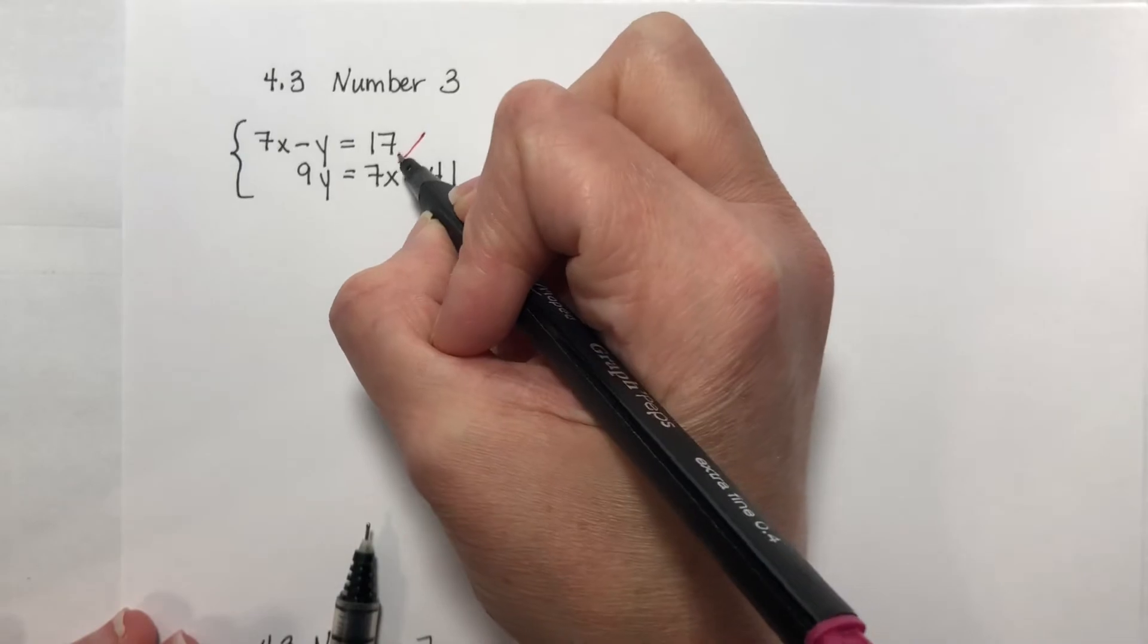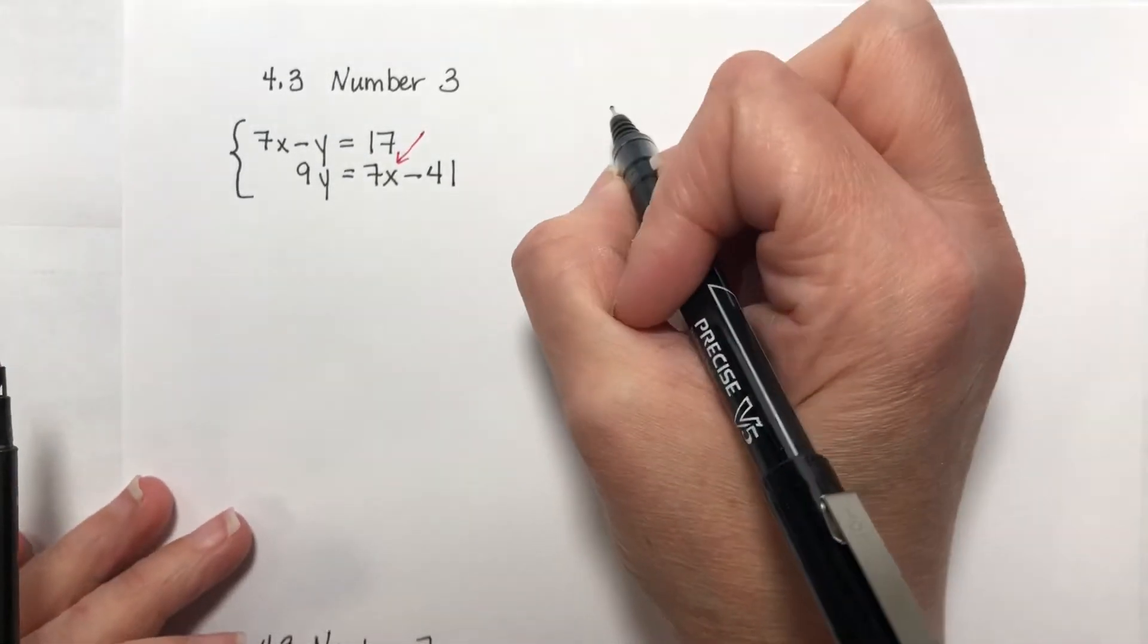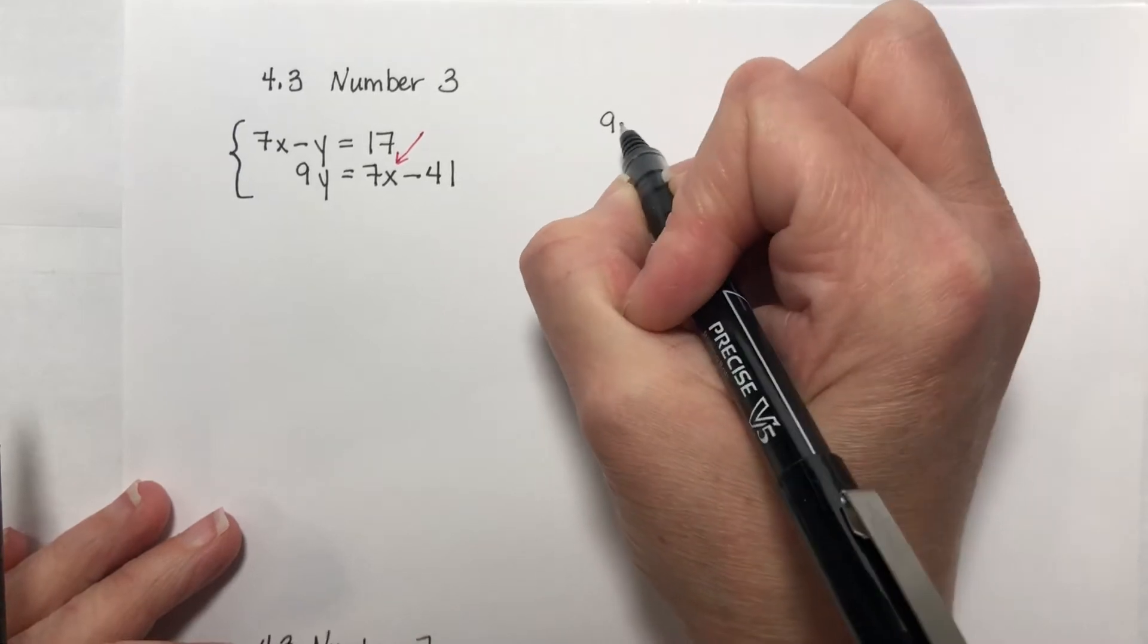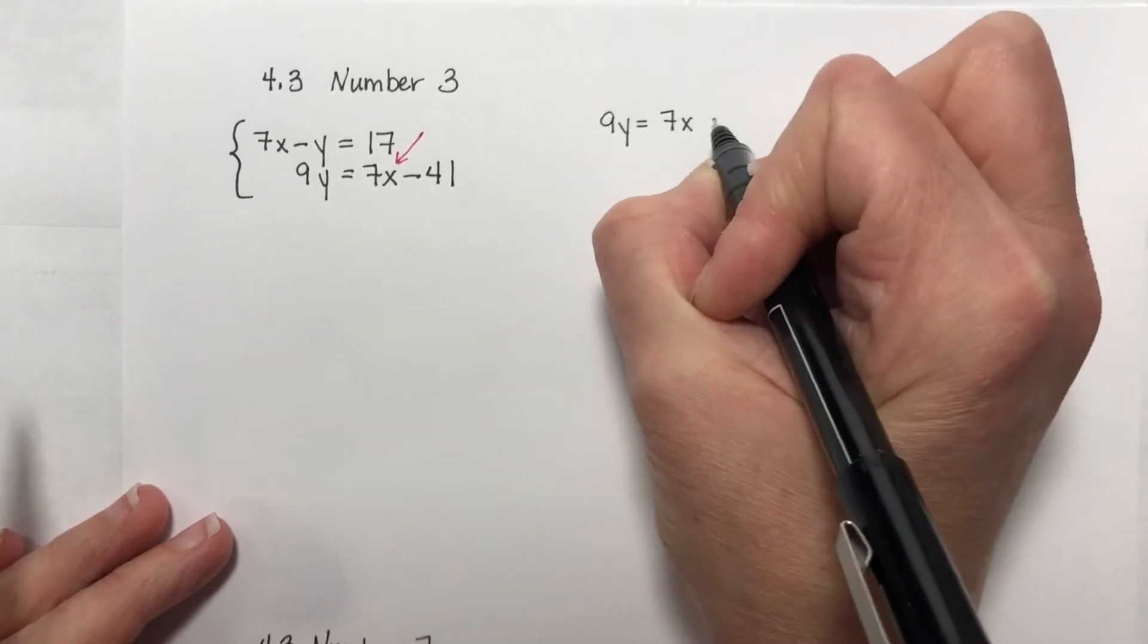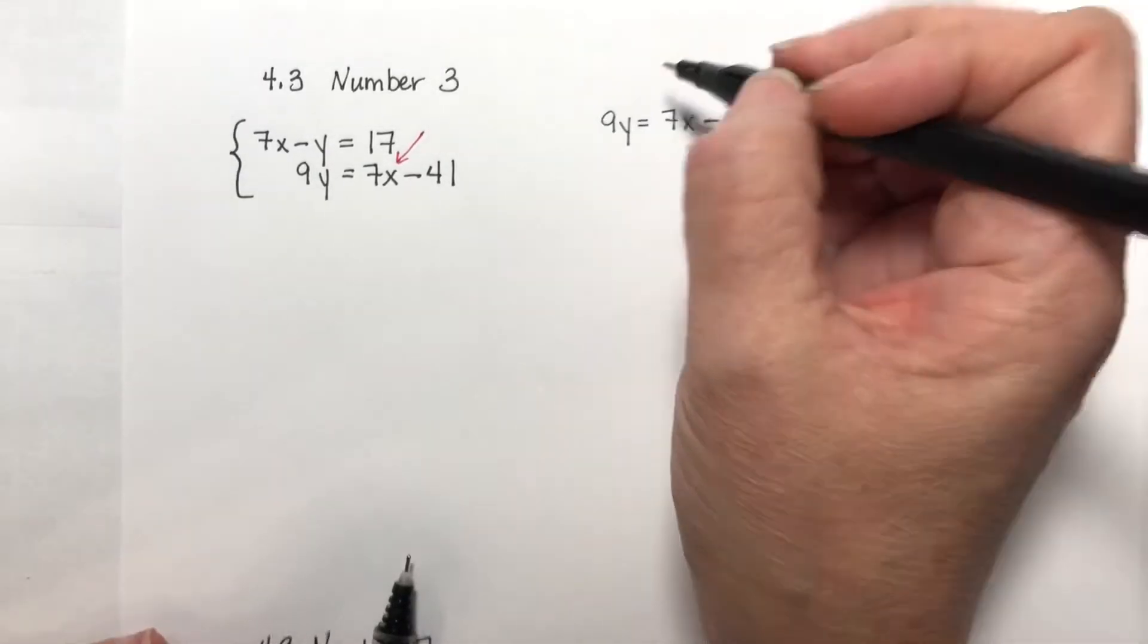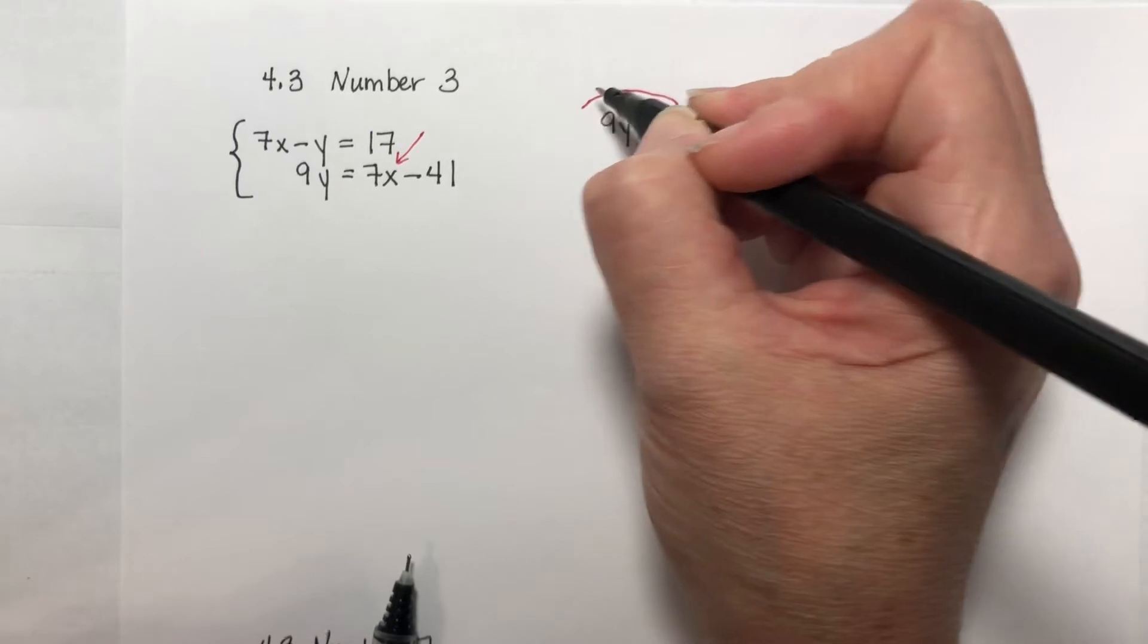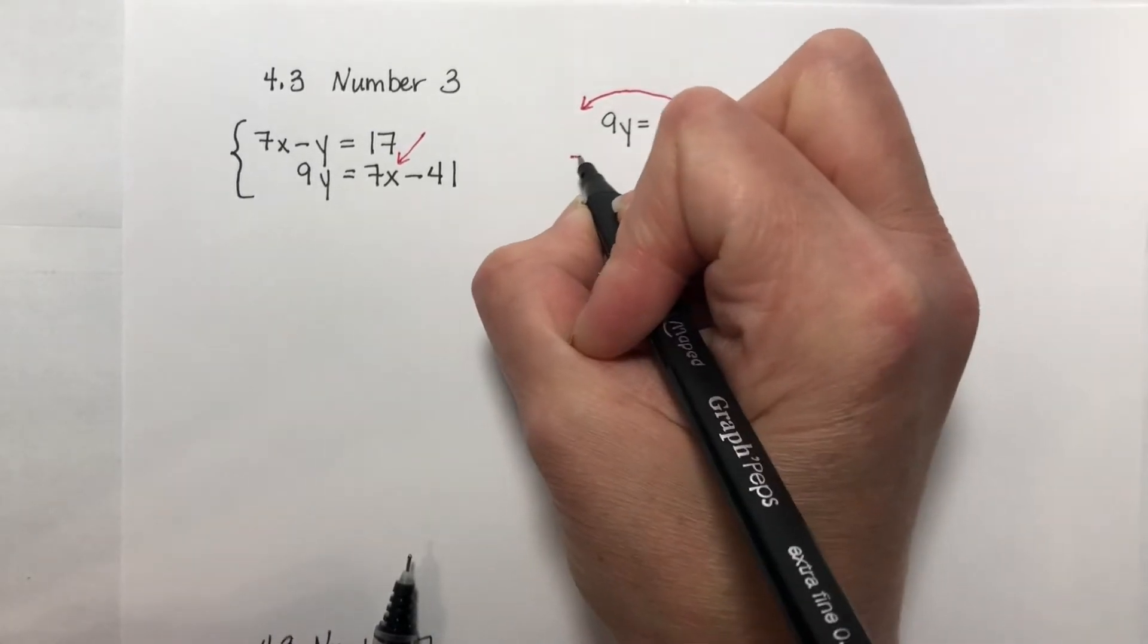So the first thing I'm going to do is start to reorder this equation right here because I want the x on the other side. So if I'm going to rewrite that equation that I have there, 9y equals 7x minus 41, I want the 7 on the other side, so I'm going to move this over to here. And so I'm going to subtract 7x from both sides.